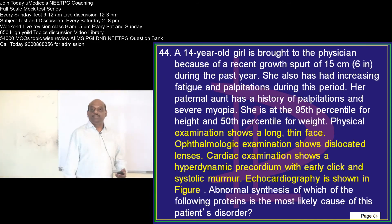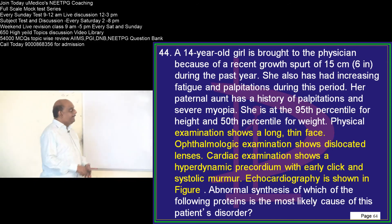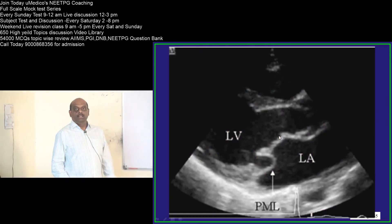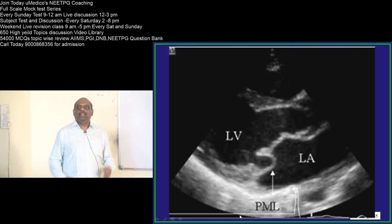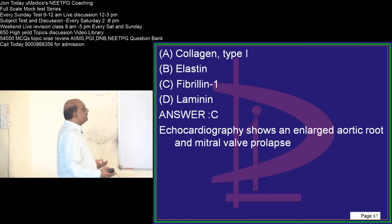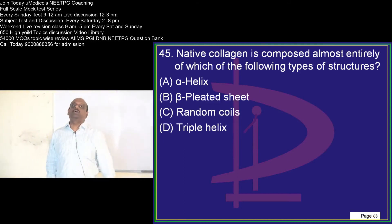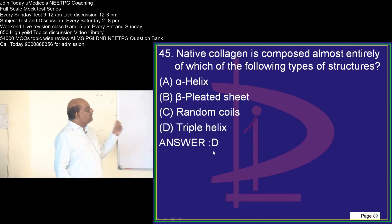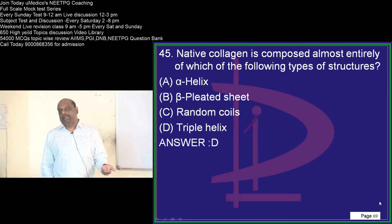A 14-year-old with dislocated lens, hyperdynamic precordium, and mitral valve prolapse — classical case of Marfan syndrome. Marfan syndrome has a deficiency of fibrillin-1. Additionally, native collagen typically contains predominantly a triple helix structure.